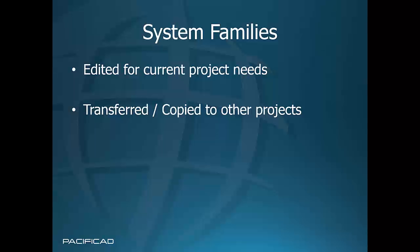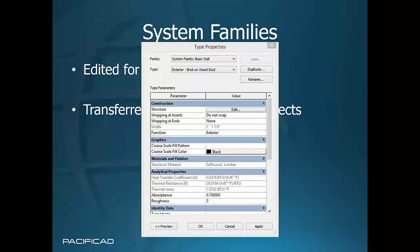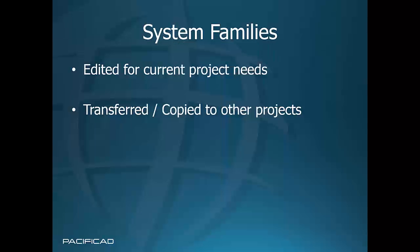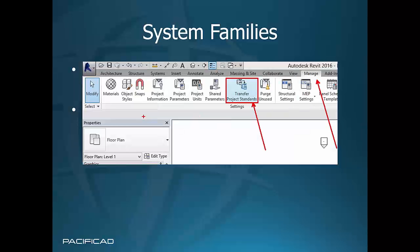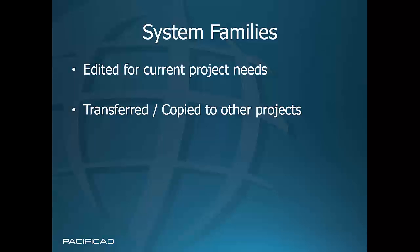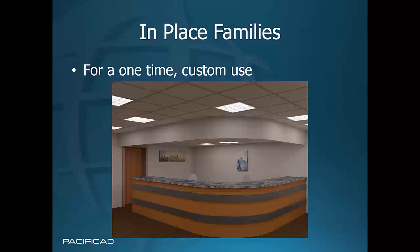System families are listed as defaults inside the template file — they're typically not an editable type of object, meaning you can't load them from the library. If the type properties window gives you the name 'system family,' it's dedicated to the template file and there's no load option. However, you can transfer system families from one project to another using the Transfer Project Standards option found in the Manage tab. Another alternative is copy and paste.